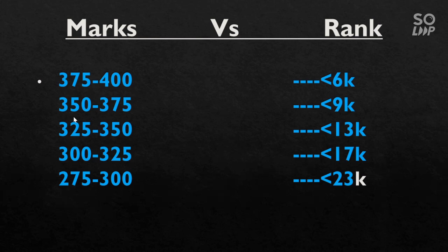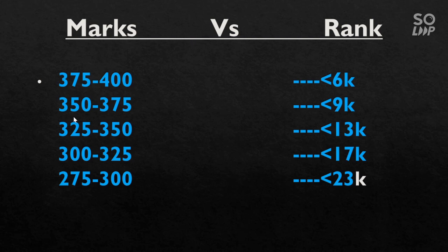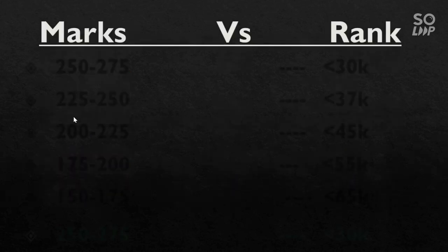For marks 300 to 325, your rank will be under 17000. For 275 to 300, your rank will be under 23000. I will also make a video on the counseling process — how to do counseling so as to get the best college for your particular rank, and how to do a good counseling. Stay tuned for the next video.